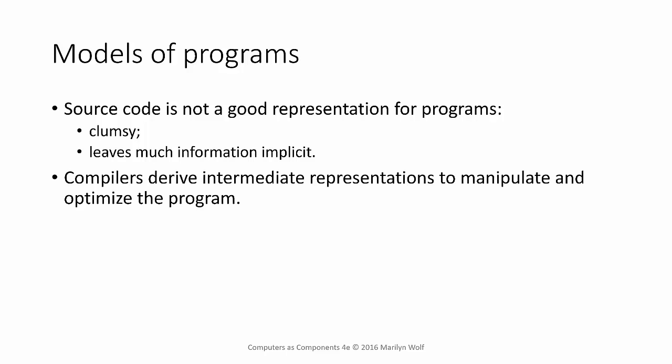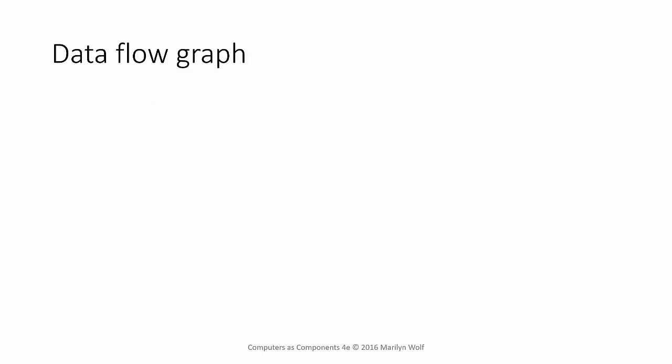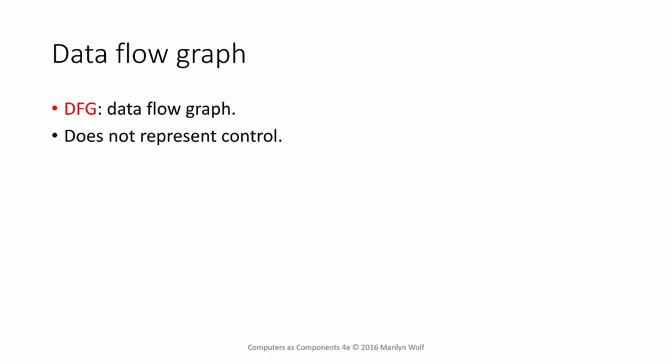Compilers use a series of intermediate representations when they manipulate and optimize programs. We can make use of some of these representations to help us understand programs and also the transformations we use to go from high-level languages. We'll look at representations for both data flow and control flow. The data flow graph is a basic representation, often called a DFG. It only represents data flow, not control.